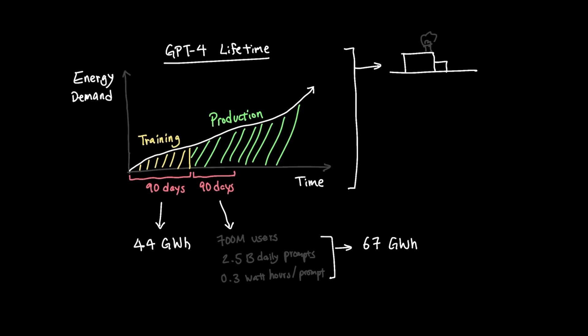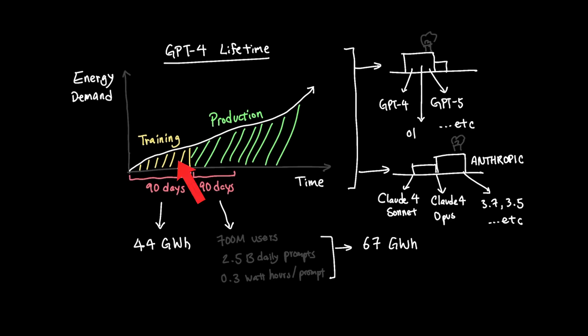In comparison to earlier math where training the GPT-4 model for 90 days costs around 44 gigawatt hours in total, deploying the GPT-4 for 700 million users that runs 2.5 billion prompts per day at 0.3 watt hours, we come to the total number of around 67 gigawatt hours for 90 days of serving GPT-4 on ChatGPT. And keep in mind that AI companies typically serve multiple AI models rather than just one. For example, Anthropic serves CloudForce Opus as well as backwards compatible models like Cloud 3.7, 3.5, and more. So you can see why the energy needed here is compounding really fast. And not only in training, but more importantly, in running the models.